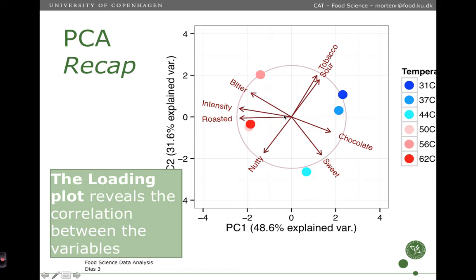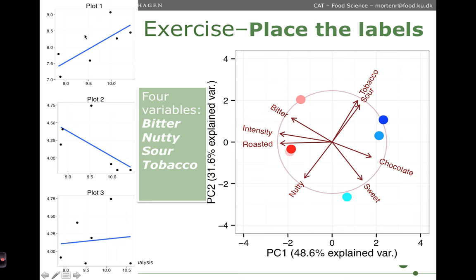Here is a short exercise: we have three scatter plots each between two response variables. Use the loading plot to put in the labels on the axes. There are four labels — bitter, nutty, sour, and tobacco — and some should be used twice. Put them on the correct axes reflecting the structure in the loading plot. Pause the video now and contemplate it for a couple of minutes.